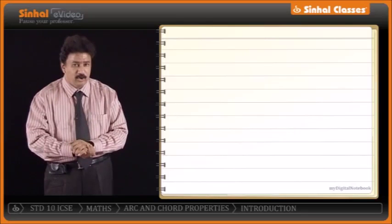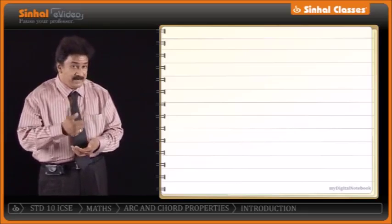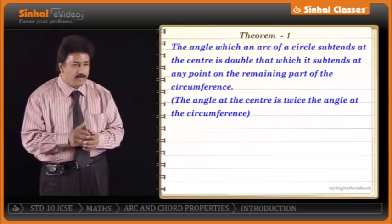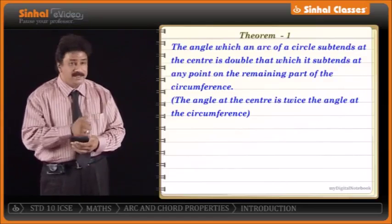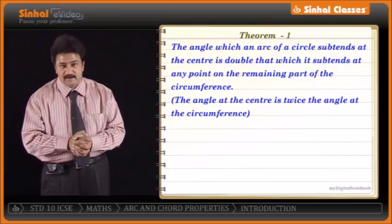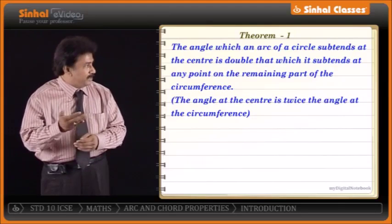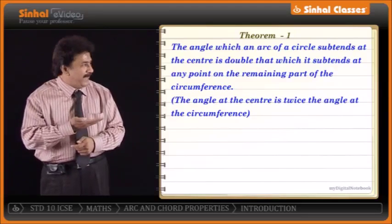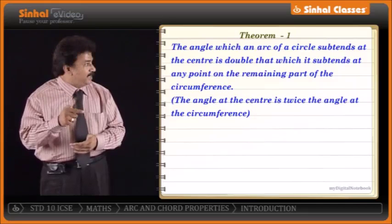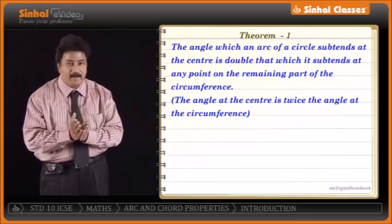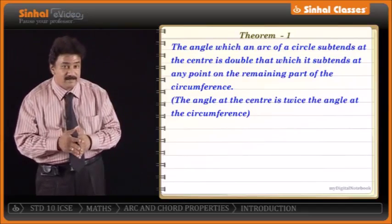We start with the first theorem of arc and chord properties. The first theorem says: the angle that an arc of a circle subtends at the center is double that which it subtends at any point on the remaining part of the circumference. In short, the angle at the center is twice the angle at the circumference.